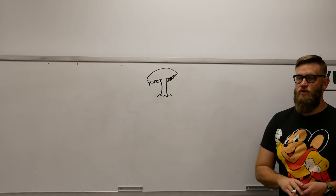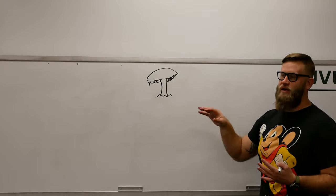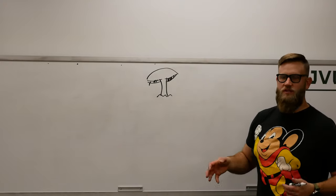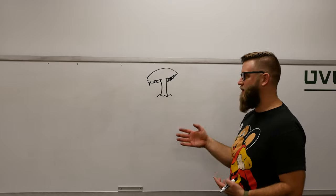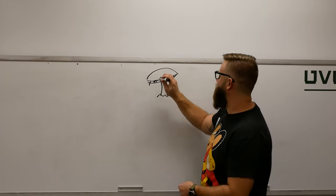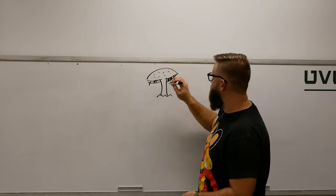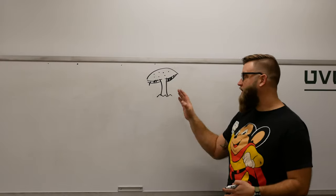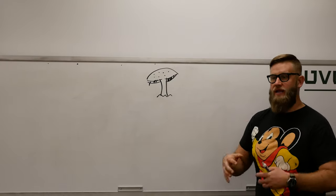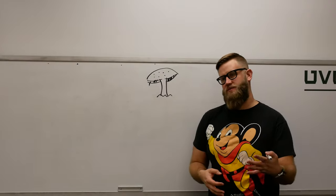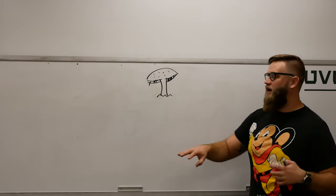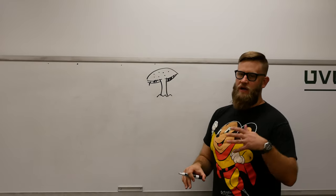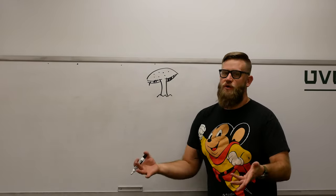Basidiomycota is your typical mushroom — button mushrooms, oyster mushrooms, the fly agaric that's red with spots, which probably inspired Santa Claus. This is your Basidiomycota. The fruiting body is called a basidiocarp — 'basidio' plus 'carp' meaning body. And when we talk about Ascomycota in a minute, that's an ascocarp.